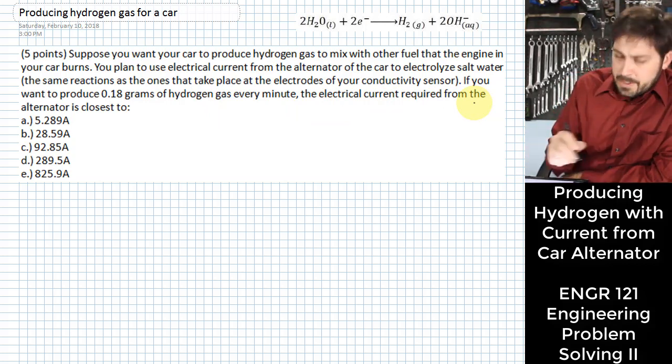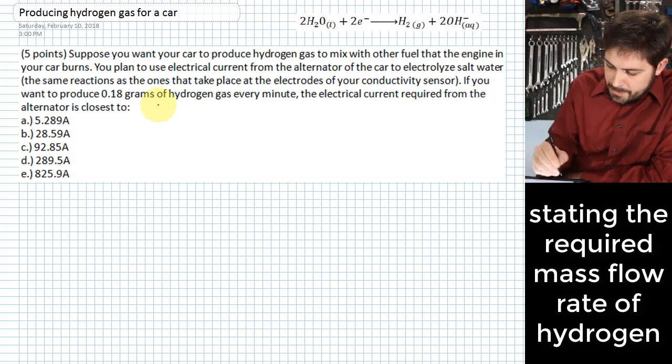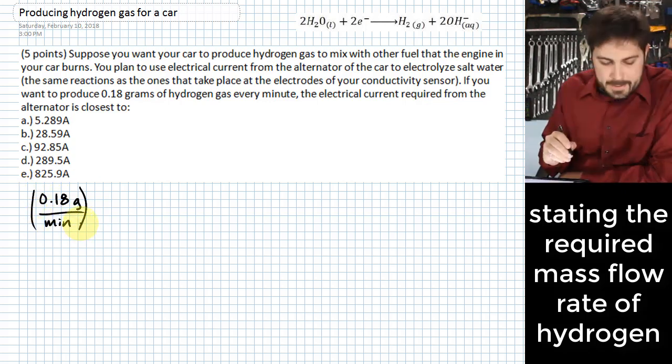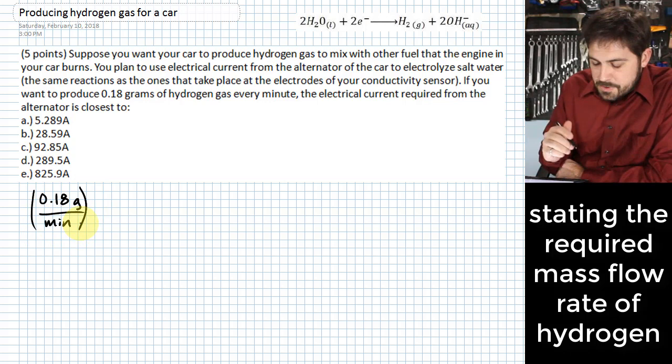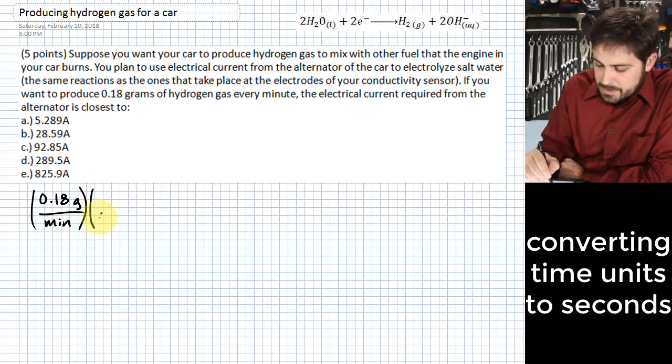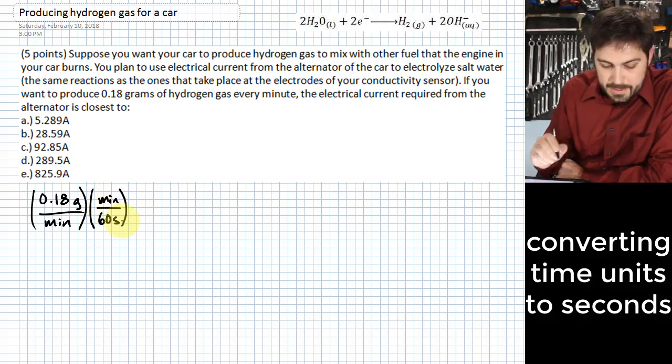So here's how that works. We need 0.18 grams per minute. So let's just go ahead and put that on here. Maybe the first thing for us to deal with is the time issue. For us to get into something like amperes, we're probably going to want this minutes in seconds. So I'm going to put this in here where I put 60 seconds down here for every minute. So I'll deal with that first.